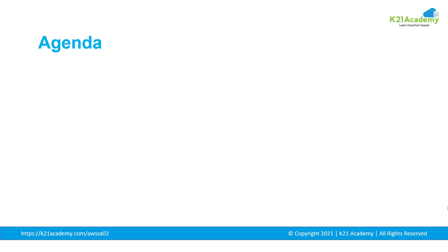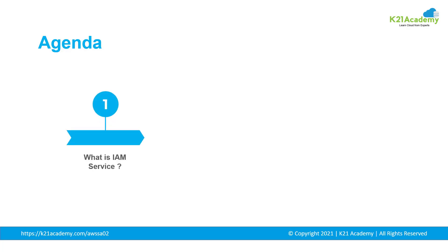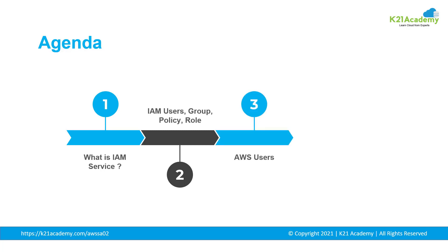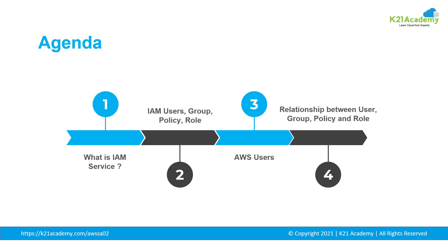Now let us take a quick glance at the agenda. First, we will be introduced to Identity and Access Management service. Then we will go through IAM users, groups, policy, and role. After that, we will go through AWS users — which are root user and IAM user. And finally, we will try to understand the relationship between user, group, policy, and role.